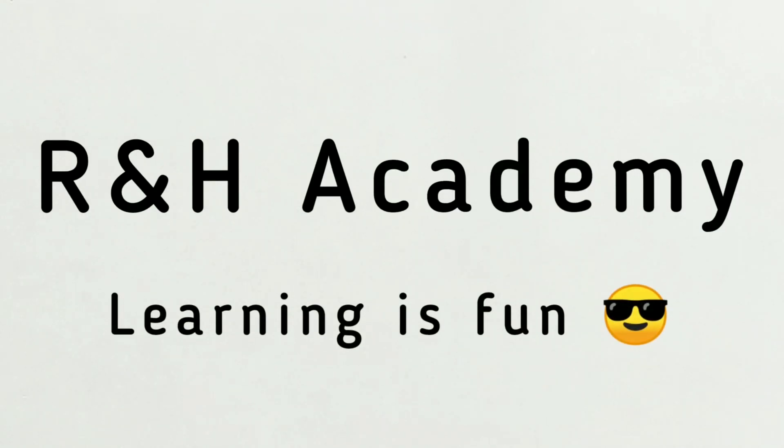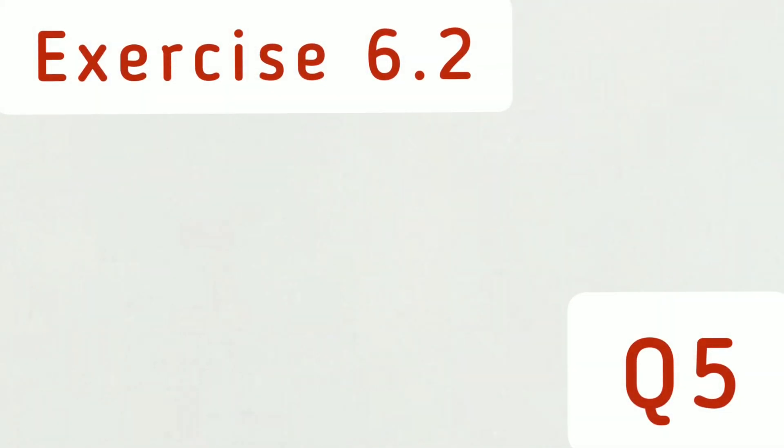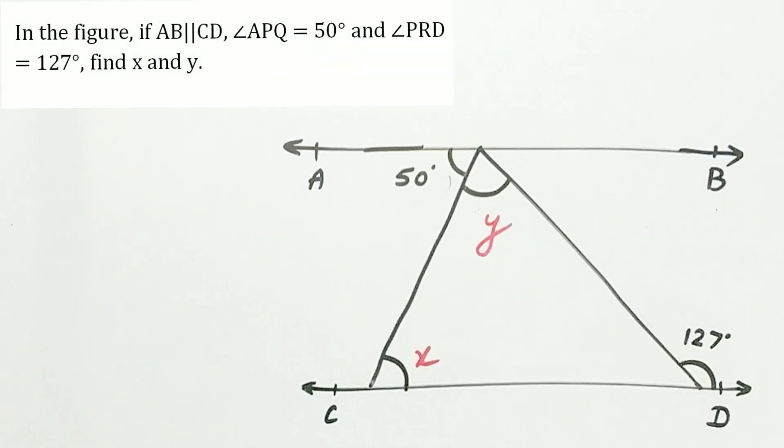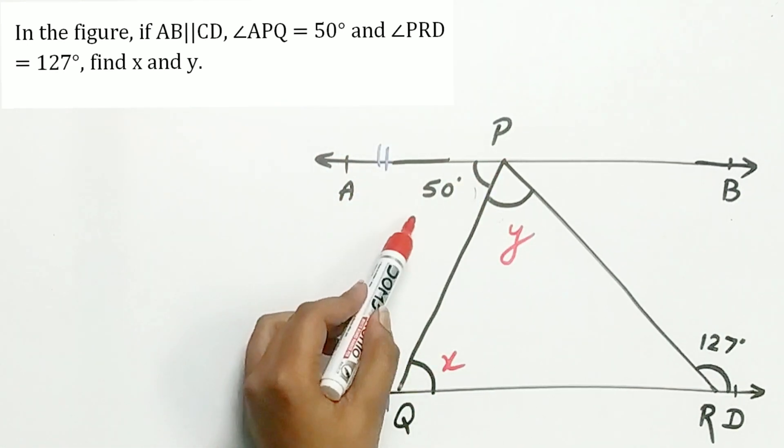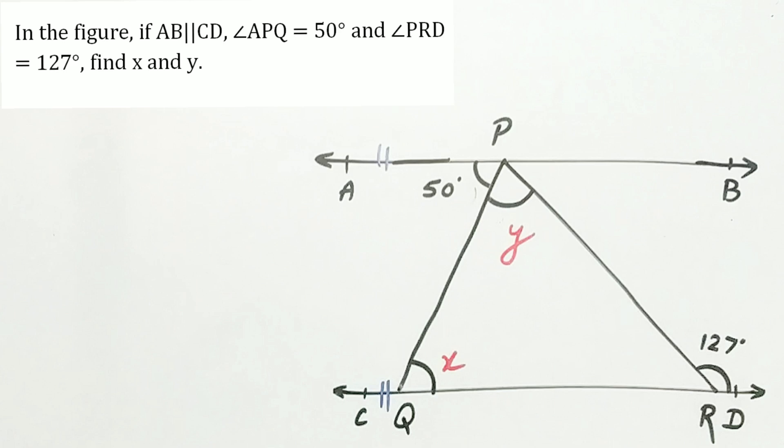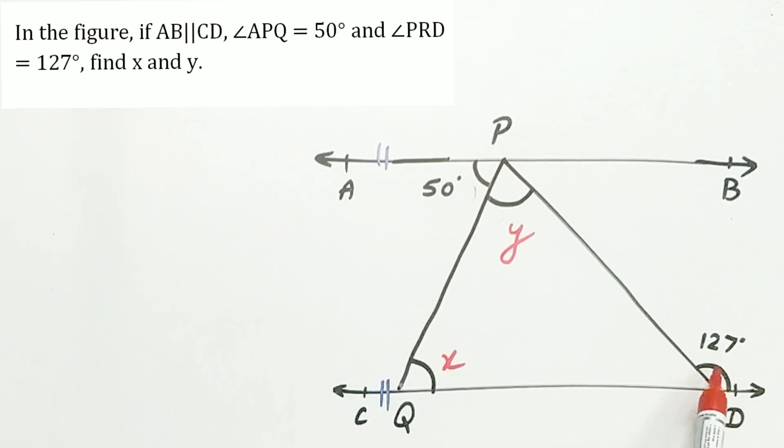Welcome to R&H Academy channel. Question 5 of exercise 6.2 says: in the figure, AB is parallel to CD, angle APQ is equal to 50 degrees, and angle PRD is equal to 127 degrees. Find x and y.